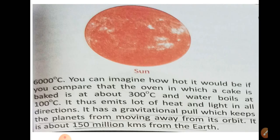It is estimated that the temperature on the sun's surface is about six thousand degrees Celsius. You can imagine how hot it would be — the oven in which a cake is baked is about three hundred degrees Celsius, and water boils at one hundred degrees Celsius. So you cannot even imagine what six thousand degrees Celsius feels like.